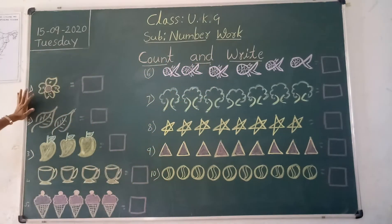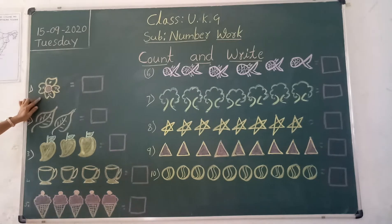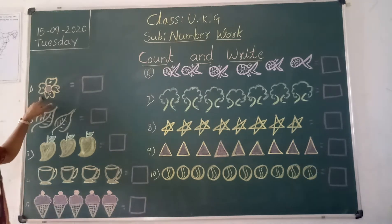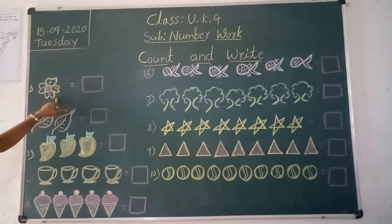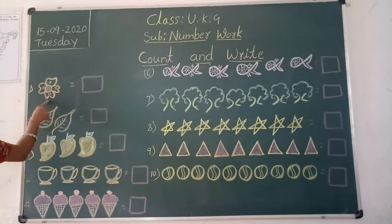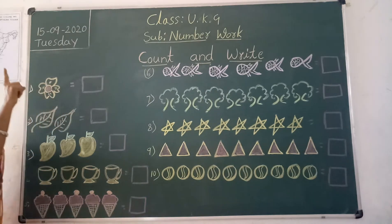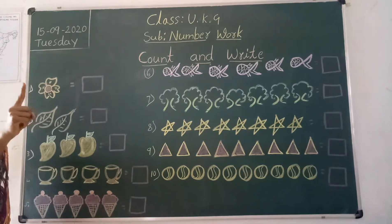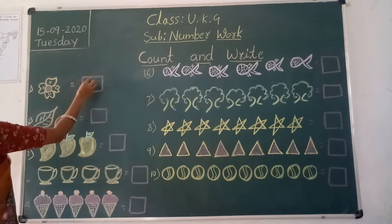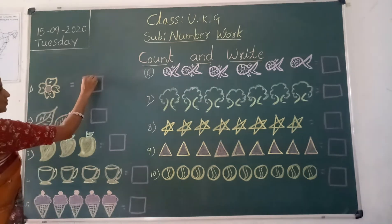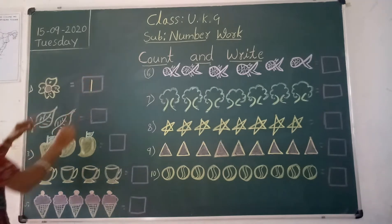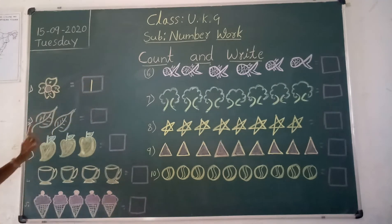First one, see here, what is this picture? Flower. So how many flowers are there here? We will count, children. How many flowers? One.